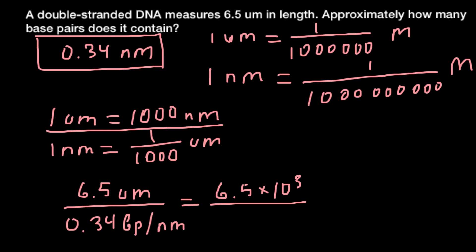to be nanometers divided by 0.34 base pairs per nanometer. Because nanometers appear on both the top and bottom of the fraction, we can cross out nanometers, and our answer is 19,100 base pairs. If you need an answer in scientific